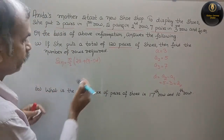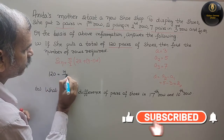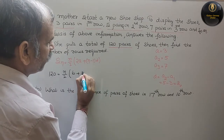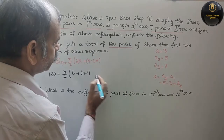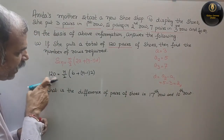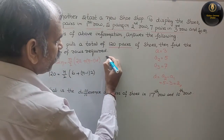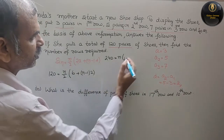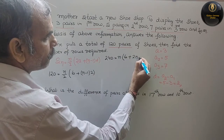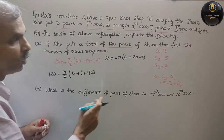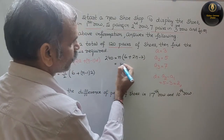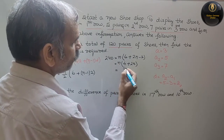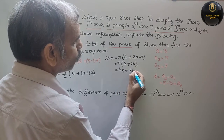Substituting values: 120 is equal to n by 2 into 2A, where 2A is 2 into 3 is 6, plus n minus 1 and D is 2. Cross multiplying gives 240 is equal to n into 6 plus 2n minus 2, which simplifies to n into 4 plus 2n, giving 4n plus 2n squared.